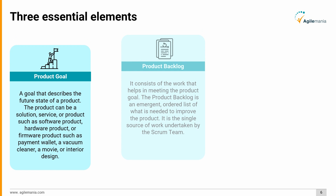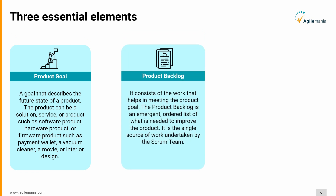Next, the product backlog. It consists of the work that helps in meeting the product goal. The product backlog is an emergent, ordered list of what is needed to improve the product. It is the single source of work undertaken by the scrum team.